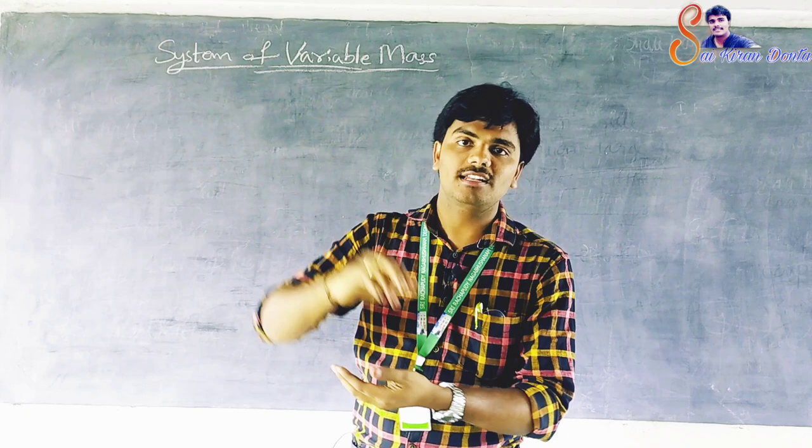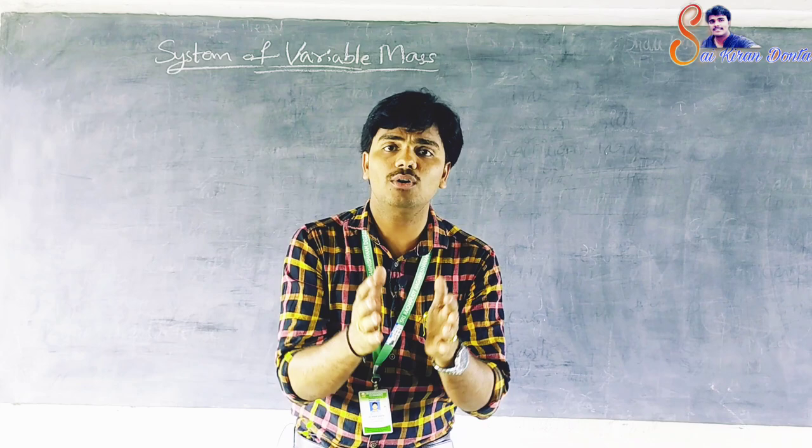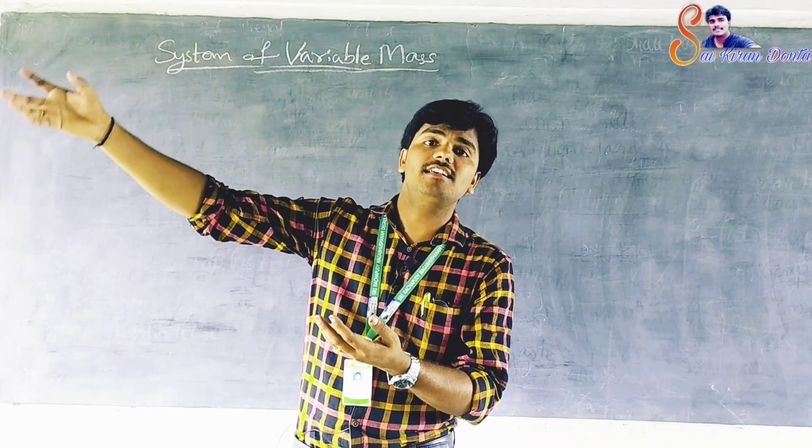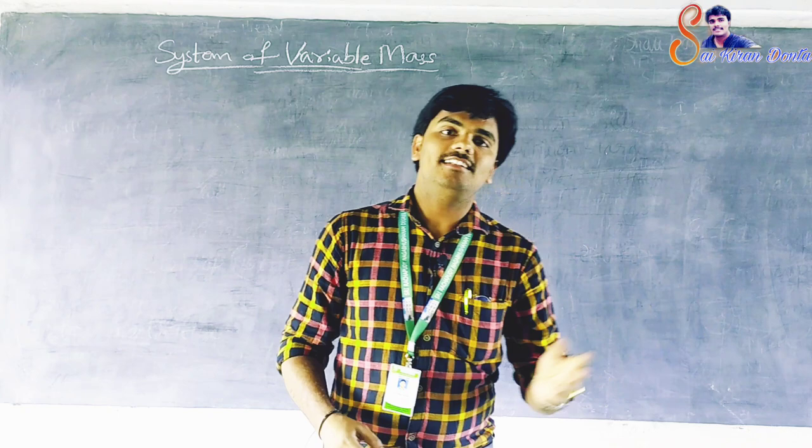Due to high pressure in the combustion chamber, the gases escape from it with very high exhaust velocities. They impart large momentum to the rocket. As a result, the rocket moves in a direction opposite to the direction of escape of gases.